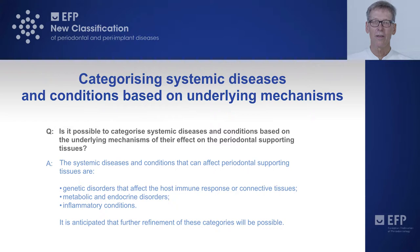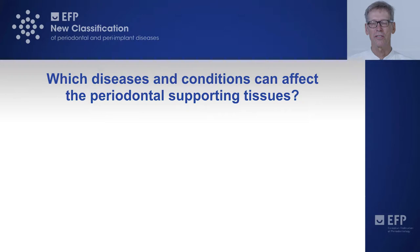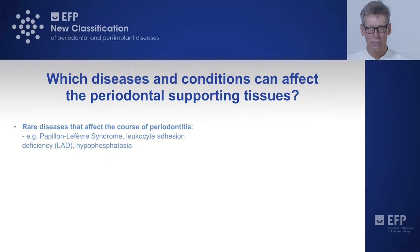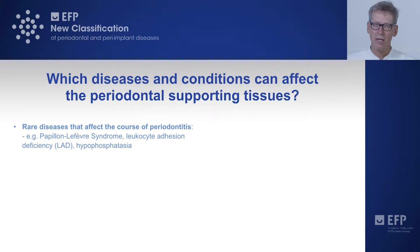In the future, there will be further refinement of these categories, but right now these are the major ones that have to be recognized. The next question: which diseases and conditions can actually affect the periodontal supporting tissues? We have to realize there are actually three categories. One would be rare diseases that can affect the cause of inflammatory periodontitis — examples are Papillon-Lefèvre, leukocyte adhesion deficiency, hypophosphatasia, and others.